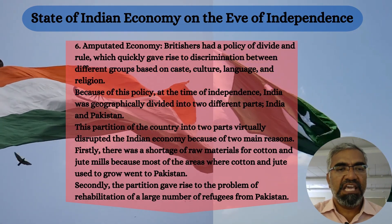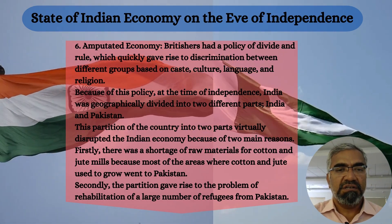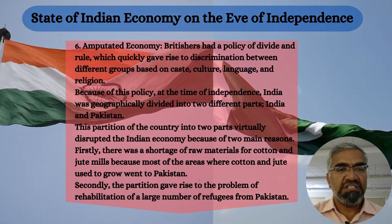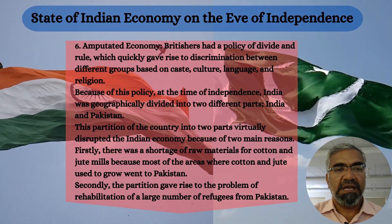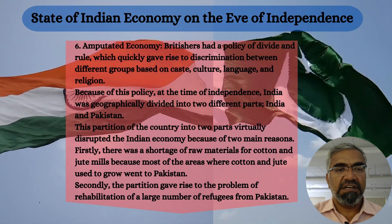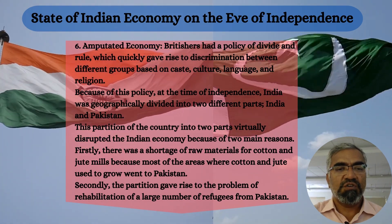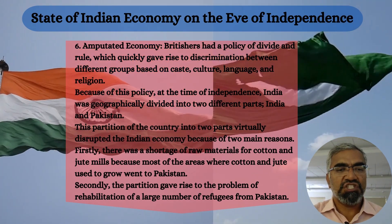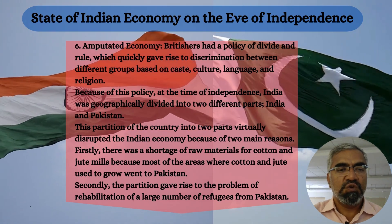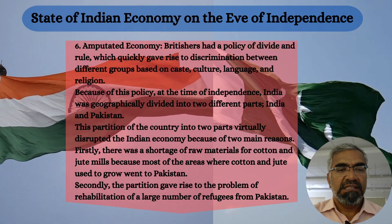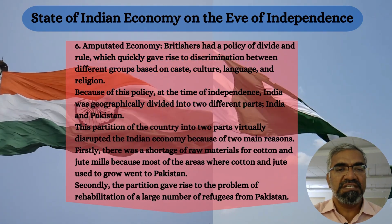Number six: amputated economy. The British had a policy of divide and rule, which quickly gave rise to discrimination between different groups based on caste, culture, language, and religion. Because of this policy, at the time of independence, India was geographically divided into two parts: India and Pakistan. This partition virtually disrupted the Indian economy for two main reasons. Firstly, there was a shortage of raw materials for cotton and jute mills, as most areas where cotton and jute grew went to Pakistan. Secondly, the partition gave rise to the problem of rehabilitation of a large number of refugees from Pakistan.